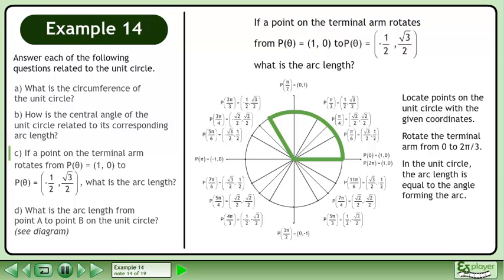In the unit circle, the arc length is equal to the angle forming the arc. The arc length is equal to 2π over 3.